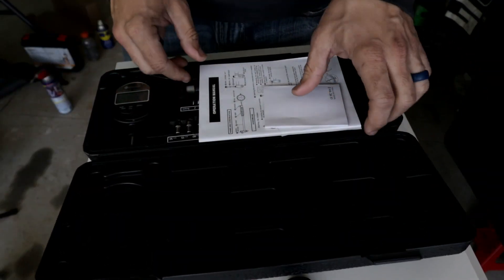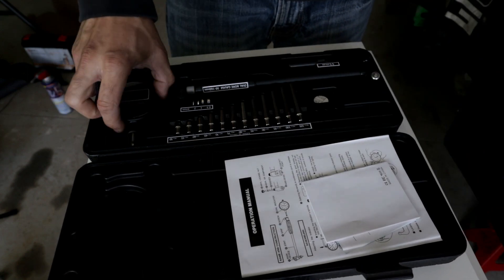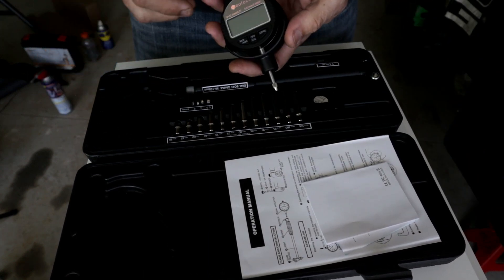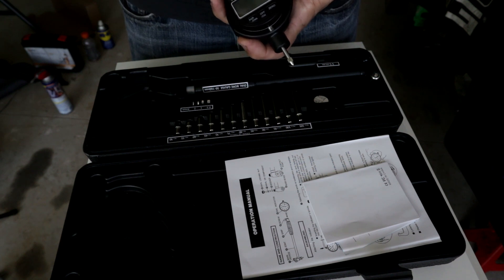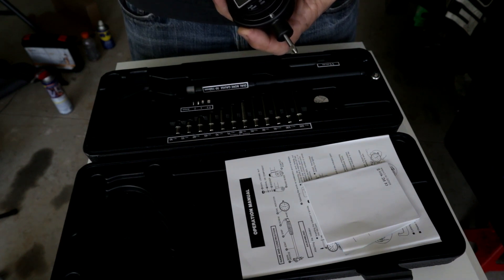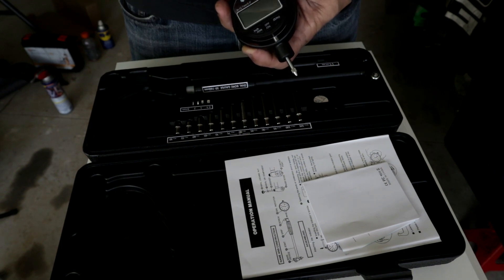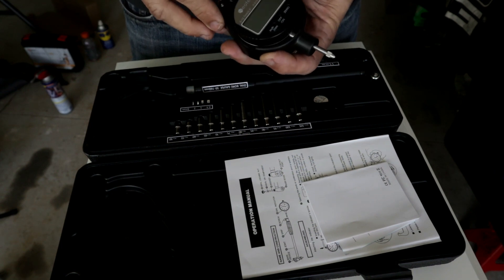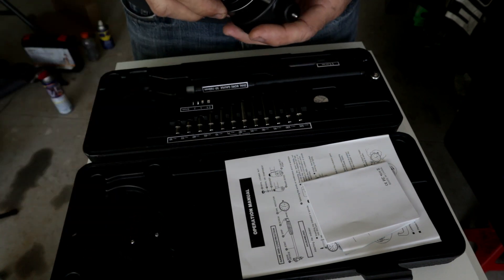The first thing we want to do is take the dial indicator out of the safety casing. You can do that by taking the two Phillips screws. Don't throw these away because this is probably the best place to put it back when you're not going to use it and you're going to store it.